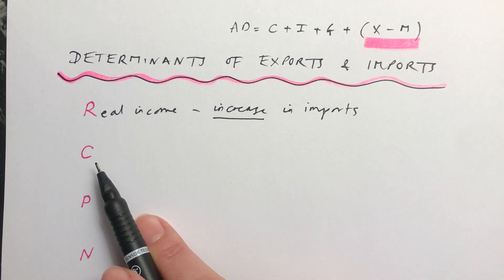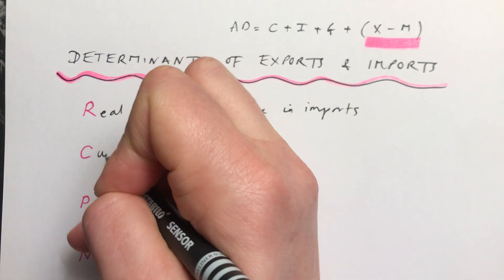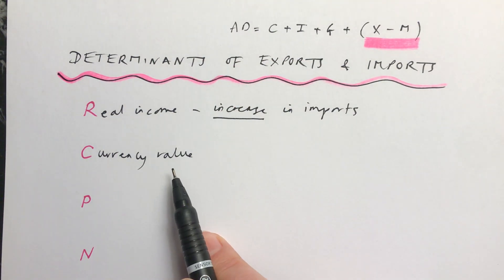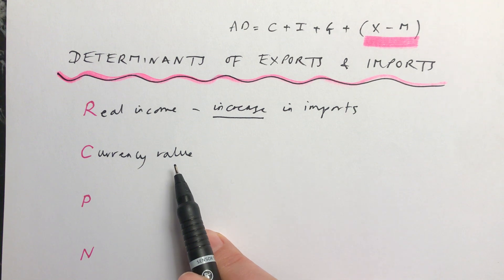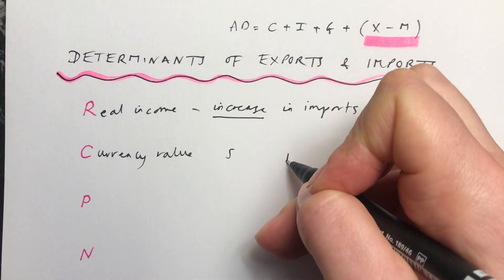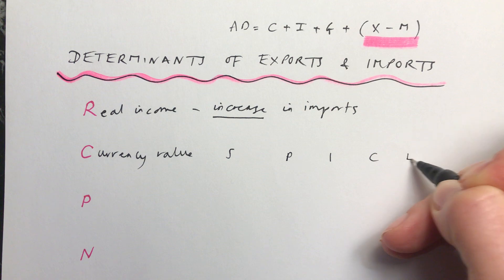The second one, C, stands for currency value, because an economy has their own currency and you can see how much of another currency they can buy with their own currency. That's the strength of your currency. The thing to remember here is SPICED.